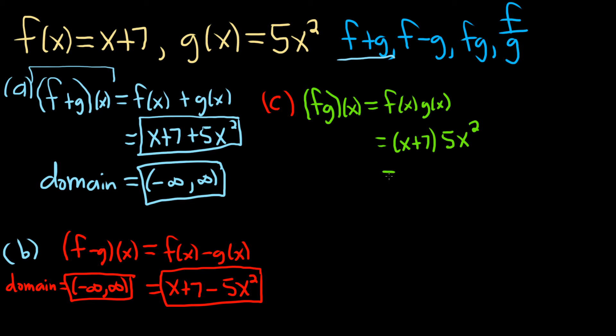x times 5x squared will give us 5x cubed, because we add the exponent. There's a 1 here, and when you multiply, you add the exponents. Plus, and then 7 times 5x squared is 35x squared. So that would be the product, which is called f times g.